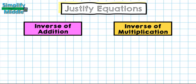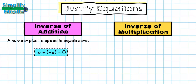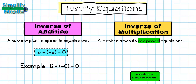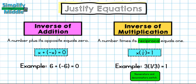In our last lesson we talked about the inverse property of addition and the inverse property of multiplication. For the inverse property of addition, a number plus its opposite equals 0 — so x + (−x) = 0, or 6 + (−6) = 0. For the inverse property of multiplication, a number times its reciprocal equals 1. A reciprocal is when the numerator and denominator switch places, so x × (1/x) = 1, and 3 × (1/3) = 1.